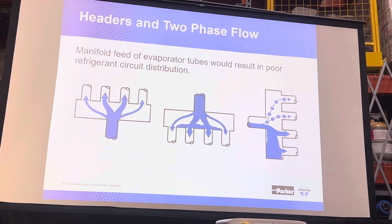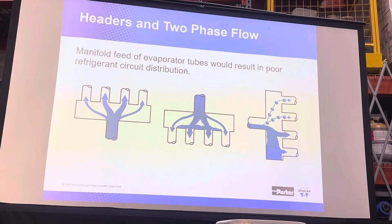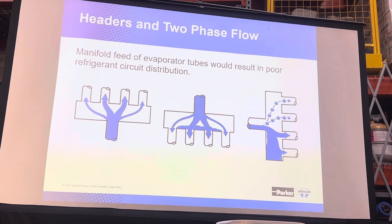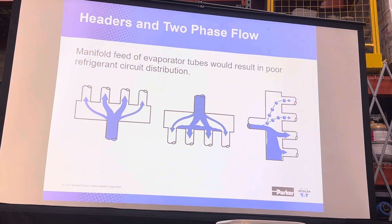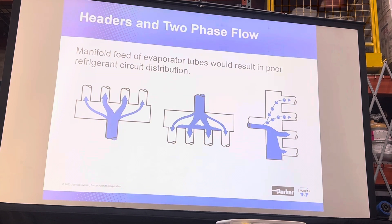If you had single-phase flow, you could use a header assembly. Headers are used in vapor compression refrigeration cycles all the time. What are some common headers? There's a discharge header, because all it has is discharge gas. There's suction headers, because all it has is suction gas.